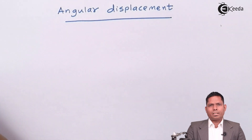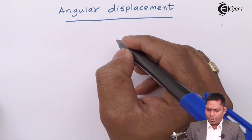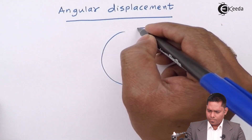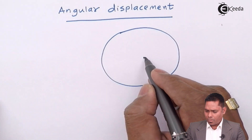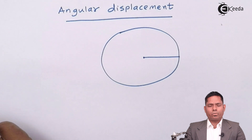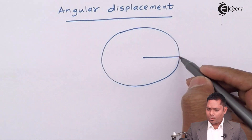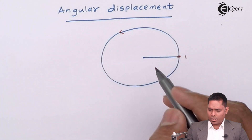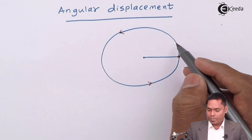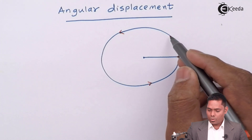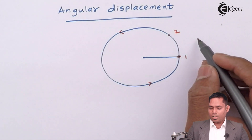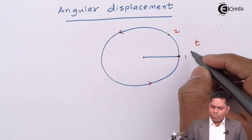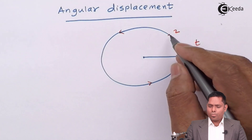Angular displacement is basically about when a body moves in a circular path. Suppose this is a circle and the body moves starting from any point. The body is here at any time, moving in an anticlockwise sense, and it moves from position 1 to position 2 in some time t.